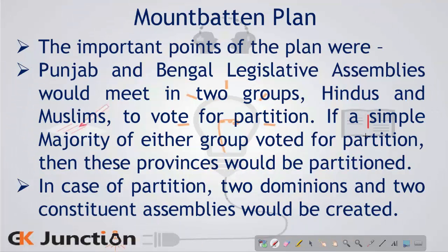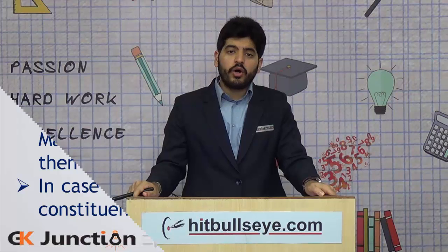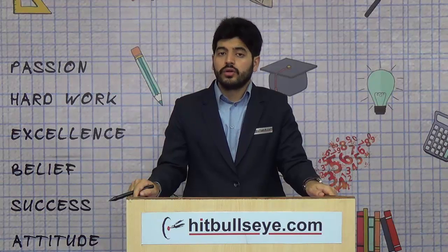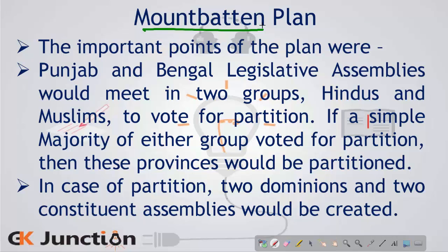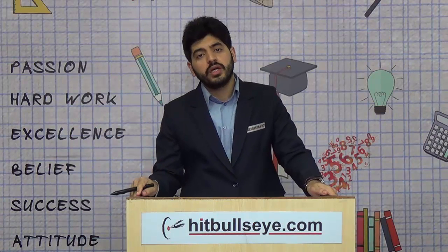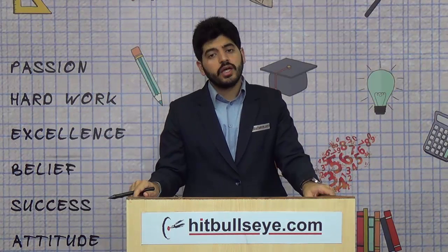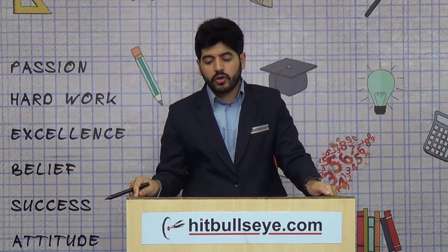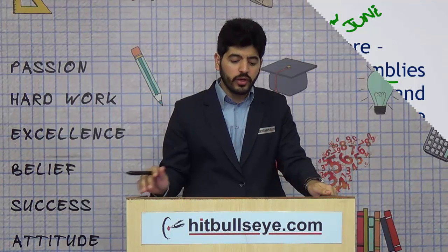To provide for a peaceful transfer of power, the British Parliament replaced Viceroy Lord Wavell with Lord Mountbatten as Viceroy. Mountbatten's single purpose was to provide for a peaceful transfer of power and the creation of two countries. He put forward the Mountbatten Plan, also famously called the 3rd June Plan. Its main features: to decide whether there would be two nations or one, the Punjab and Bengal Legislative Assemblies would meet in two groups — Hindu members and Muslim members of the Legislative Assembly — and if any group decided for a separate country, that would be provided for.